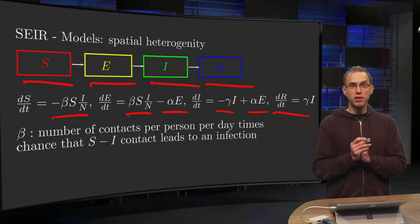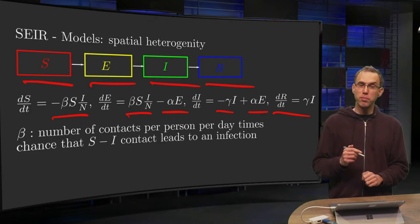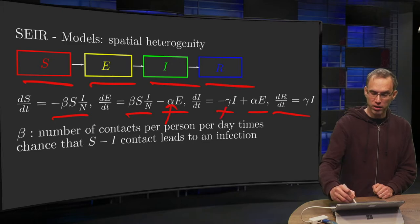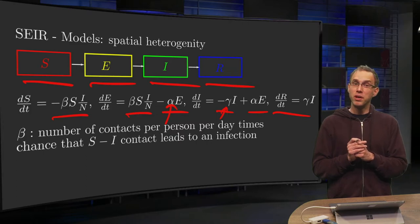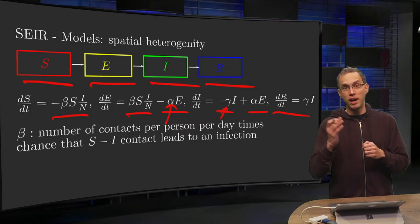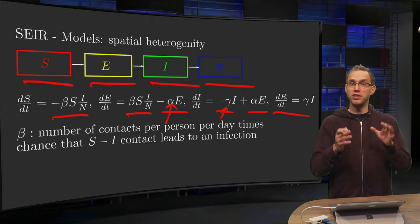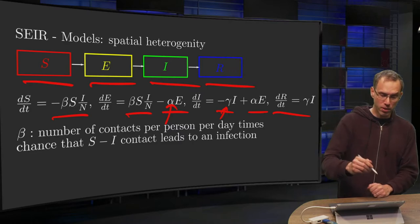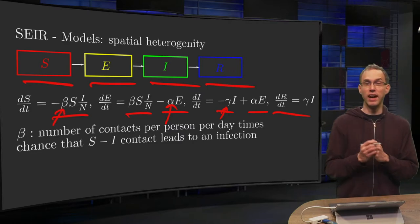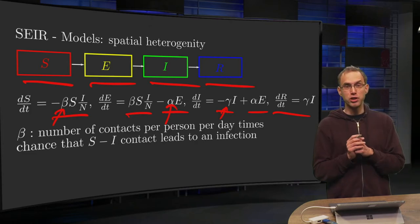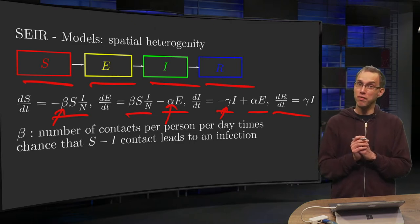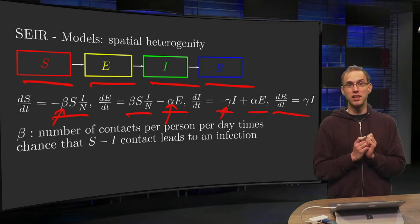Now in this set of differential equations we have a number of parameters. We have our alpha and our gamma over there, and those are not a problem. Alpha is related to the incubation time and gamma to the average duration of the illness. You can estimate those parameters fairly accurately. A problem though is this beta coefficient here, our spreading coefficient.